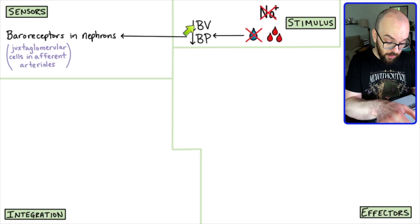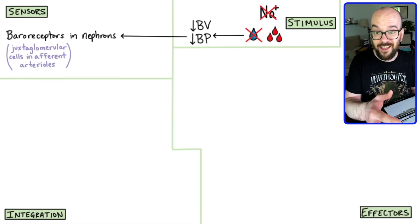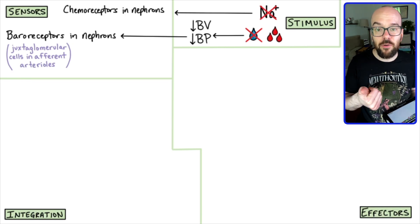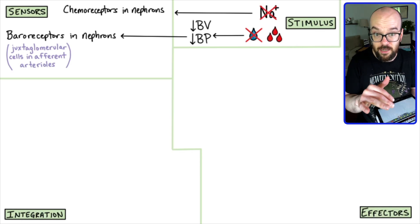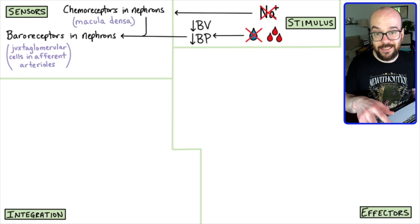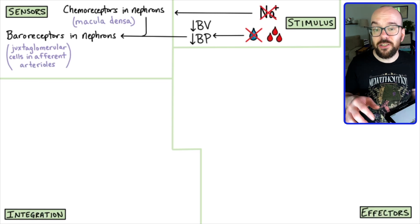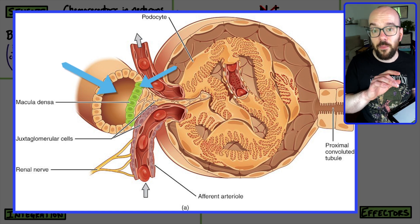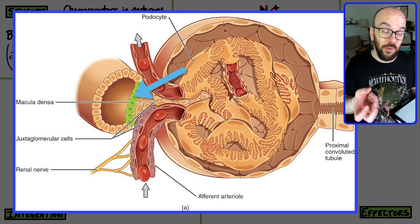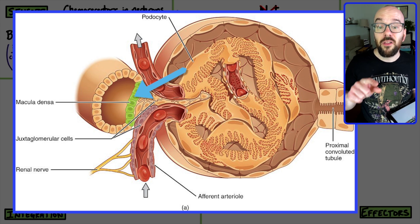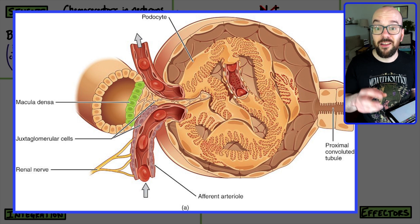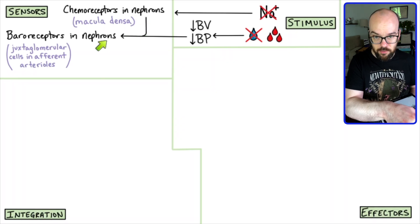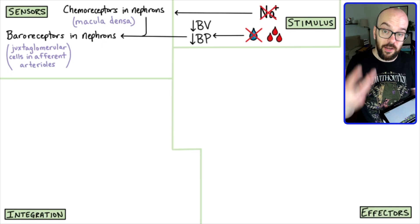Those baroreceptors will detect what's going on whenever blood volume and pressure decreases due to dehydration or hemorrhaging. But for a sodium deficiency, we need a different way to detect that. That's going to occur through chemoreceptors in the nephron — chemo means chemical, and the chemical being detected, or in this case not detected, is the sodium. Those receptors are found in the macula densa, which is in the distal convoluted tubule, very close to the glomerulus. The macula densa cells have receptors for sodium and detect how much is passing through. If the sodium level gets low, they signal the juxtaglomerular cells to let them know.